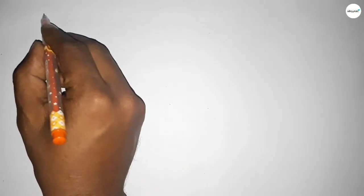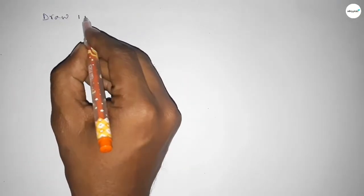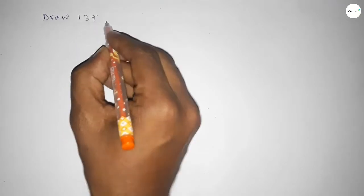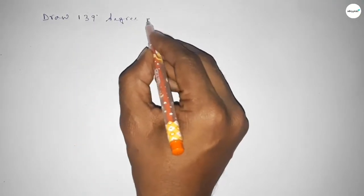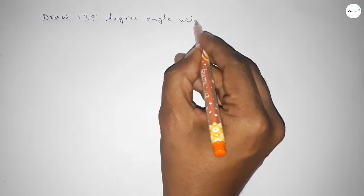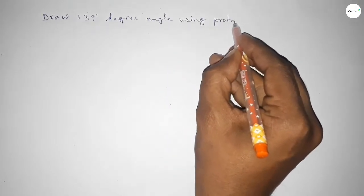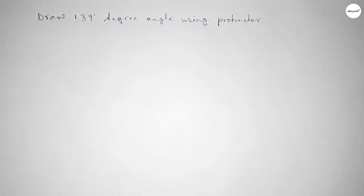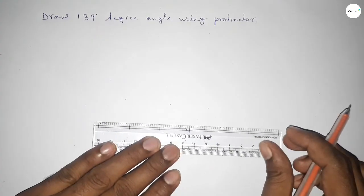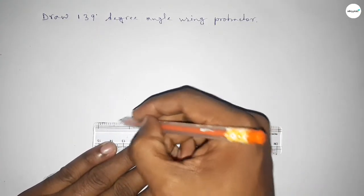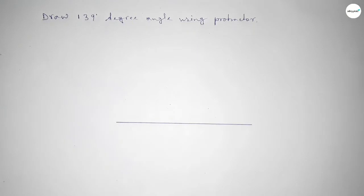Hi everyone, welcome to SSR Classes. Today in this video we have to draw a 139 degree angle by using a protractor. So let's start the video. First of all, we have to draw here a straight line of any length.